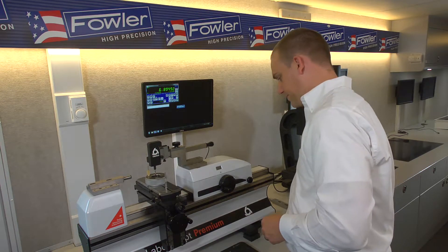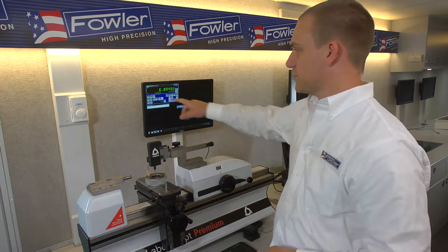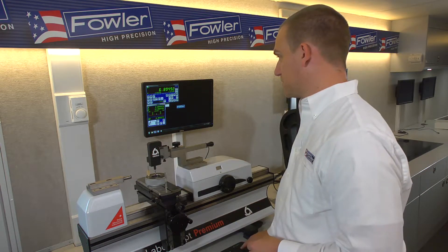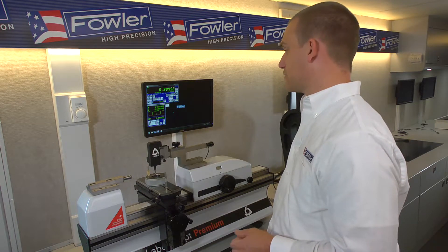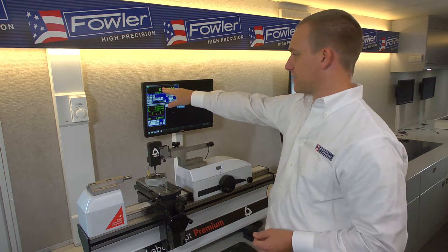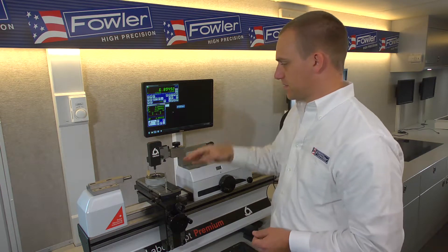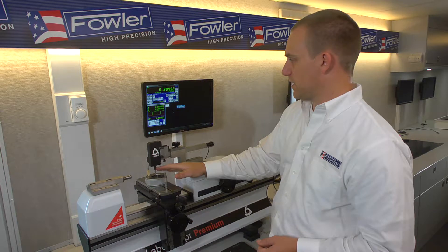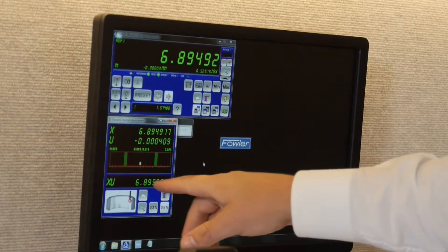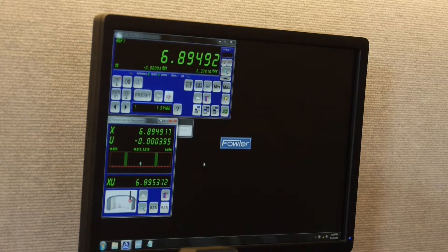On the software side of this, we'll want to press this icon here, which kind of looks like a T-ball probe. This opens the dynamic internal measurement window. So you can see we have our x-axis readout represented here. The u-axis is just the readout from the scale inside the internal measuring device. And then x-u would be the cumulative result, taking both axes into account.